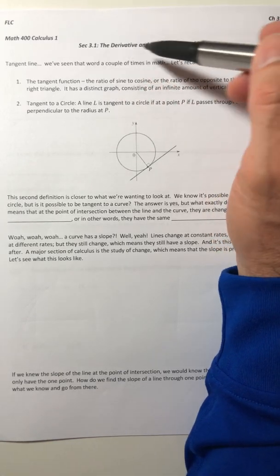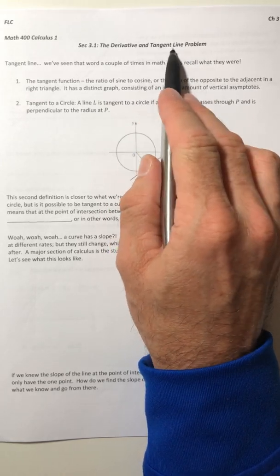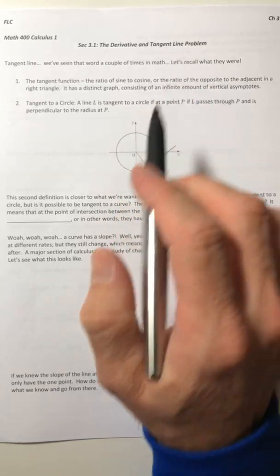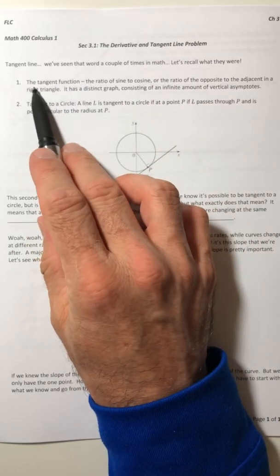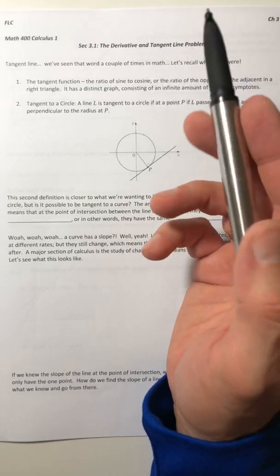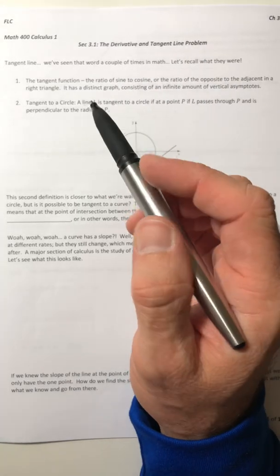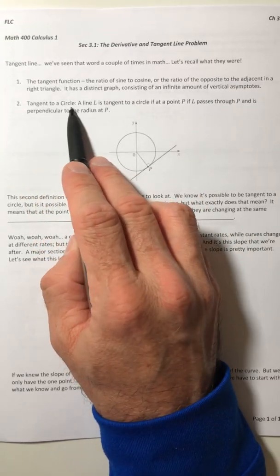Alright, so derivative and the tangent line problem. Tangent. That word right there, you've seen that before. Probably a couple of times. One, the tangent function. So, tangent of theta. The graph of it. Yeah, all that trig stuff with it. And then the second definition is tangent to a circle.